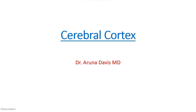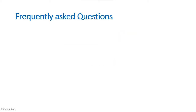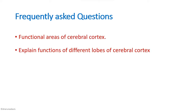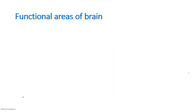In this video we are going to see some important questions that can be asked from the cerebral cortex. The frequently asked questions are: what are the functional areas of the cerebral cortex, and explain the functions of the different lobes of the cerebral cortex. We will primarily focus on the functional areas and the frontal lobe, as this is usually asked as a diagram-based question.